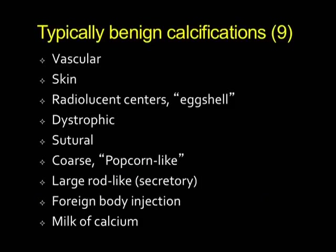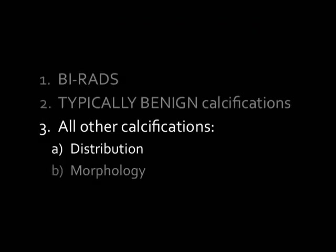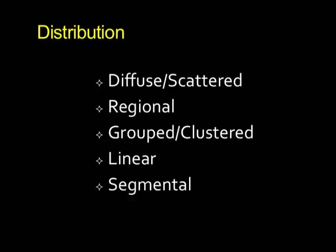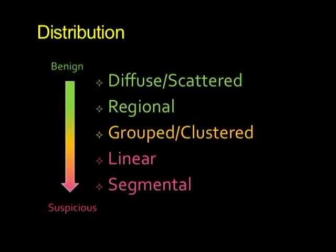That covers our nine categories of typically benign calcifications. Now we move on to distribution. There are five terms for distribution, ordered from benign to most suspicious: diffuse, regional, grouped, linear, and segmental.